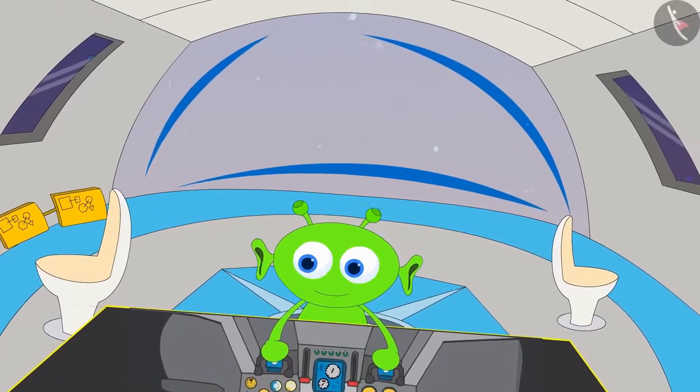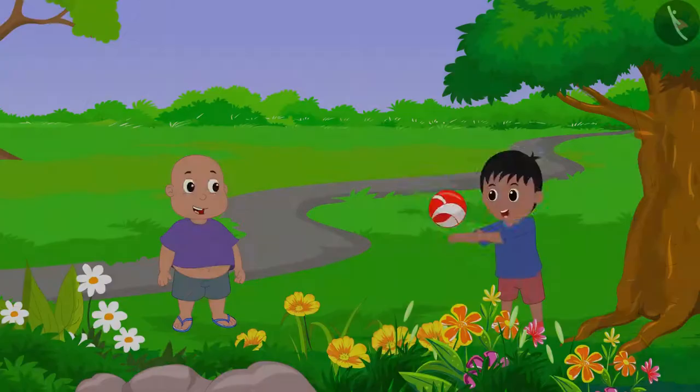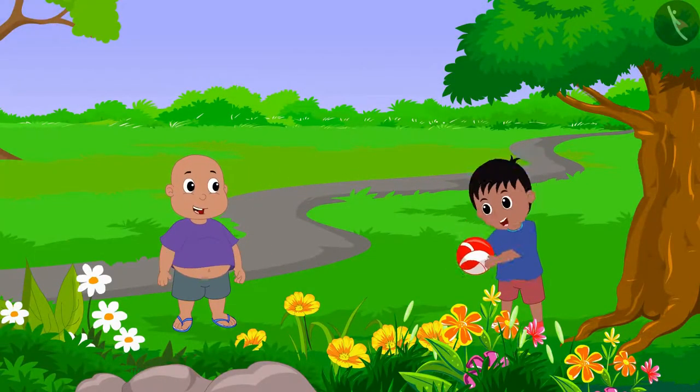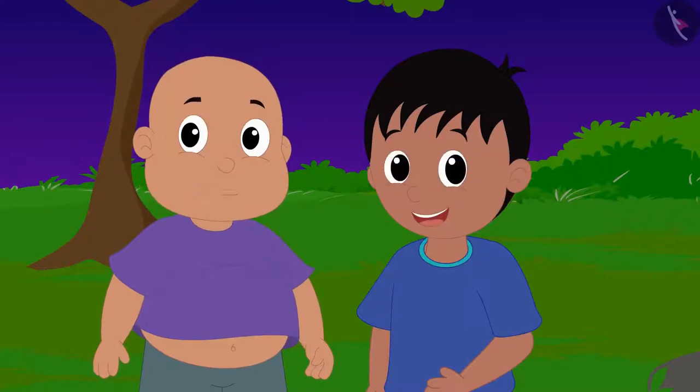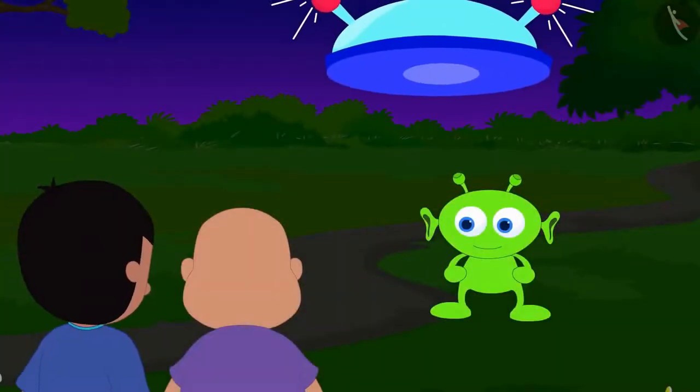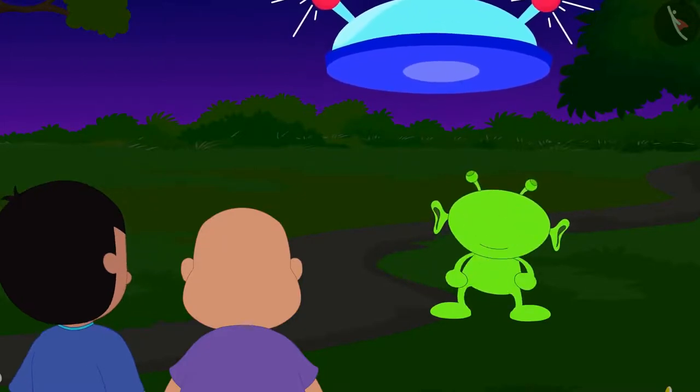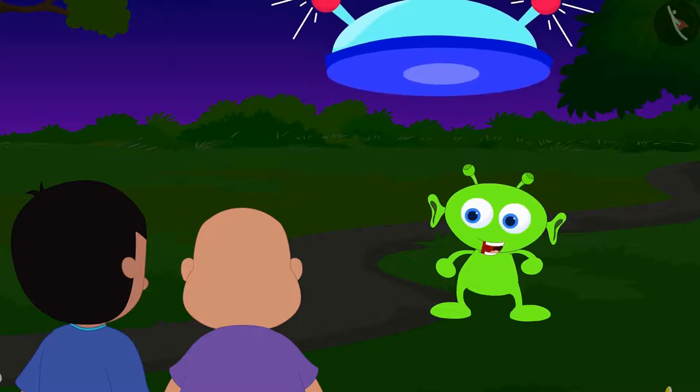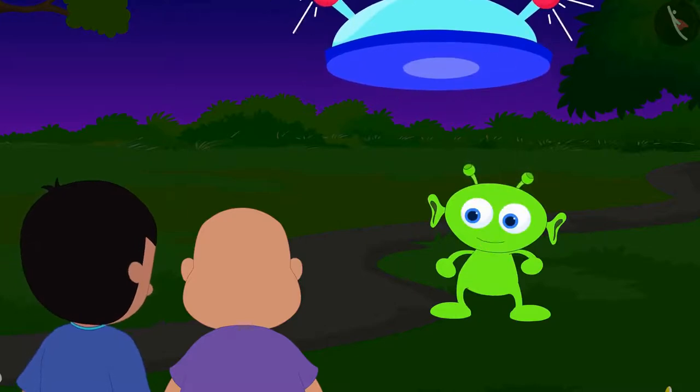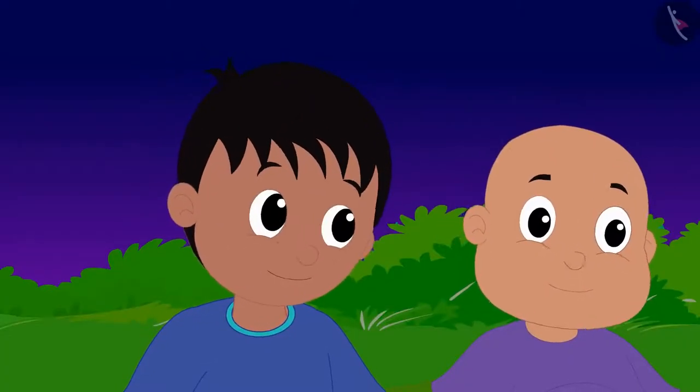The alien is going to meet Raju and Bablu today with his flying saucer. Raju and Bablu were playing in the park when the alien also reached there. Raju and Bablu are very happy to see the alien. The alien told them that today he will take them to a unique world, but he has one condition. Raju and Bablu will have to solve two of his puzzles. Raju and Bablu accepted the condition of the alien.